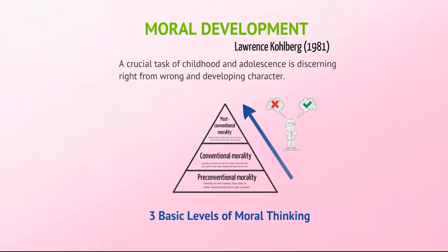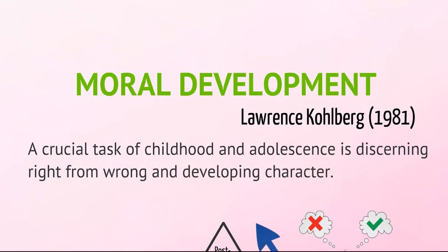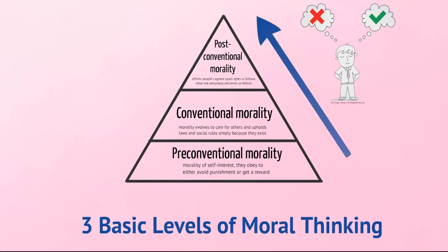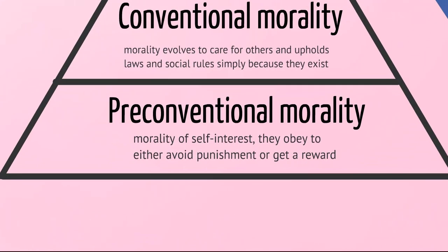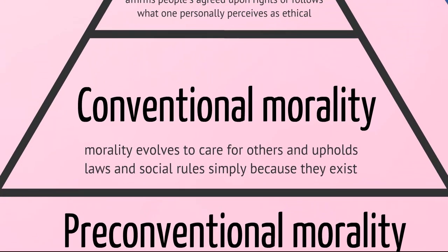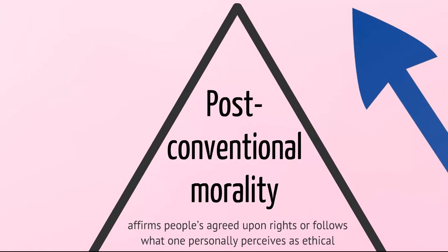Let's move on to Kohlberg and moral development. He stated that a crucial task of childhood and adolescence is discerning right from wrong and developing character, and he referred to three basic levels of moral thinking. Pre-conventional morality, before age nine, where it's a morality of self-interest and children obey to either avoid punishment or get a reward. Conventional morality, where it involves caring for others and upholding laws. And post-conventional morality, where people have agreed-upon rights and we perceive them as ethical.